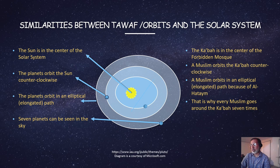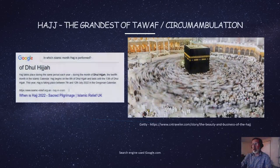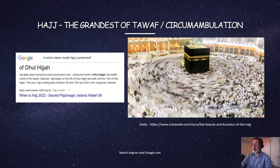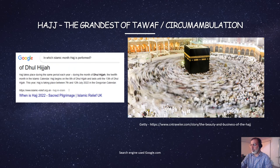Seven planets can be seen in the sky — that is why every Muslim goes around the Ka'bah seven times. The grandest Tawaf circumambulation takes place during Hajj, in the 12th Islamic month. Why? Because that's when the earth is completing its own orbit around the sun. The ritual of Tawaf is a simulation of our solar system, clearly demonstrating the knowledge of Allah, Al-Aleem, the knower of all mysteries.